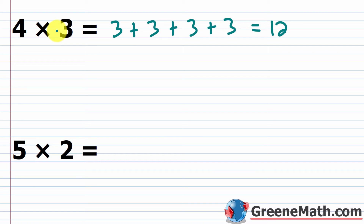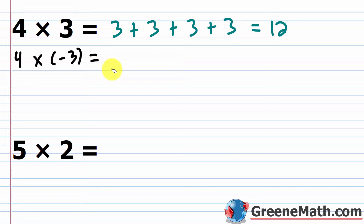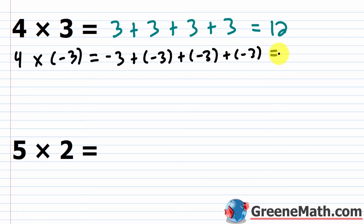Now, what if we throw in four times negative three? Following the same thought process, it means repeated addition: negative three plus negative three plus negative three plus negative three. We have a common sign, so we put a negative and add the absolute values: three plus three plus three plus three is 12. So the answer is negative 12.